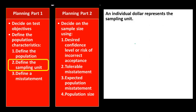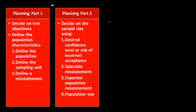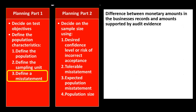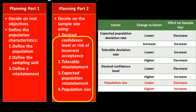Next we define the sampling unit: an individual dollar represents the sampling unit. We also define a misstatement as the difference between the monetary amounts in the business records and the amounts supported by the audit evidence — comparing what was reported to what the audit evidence supports.